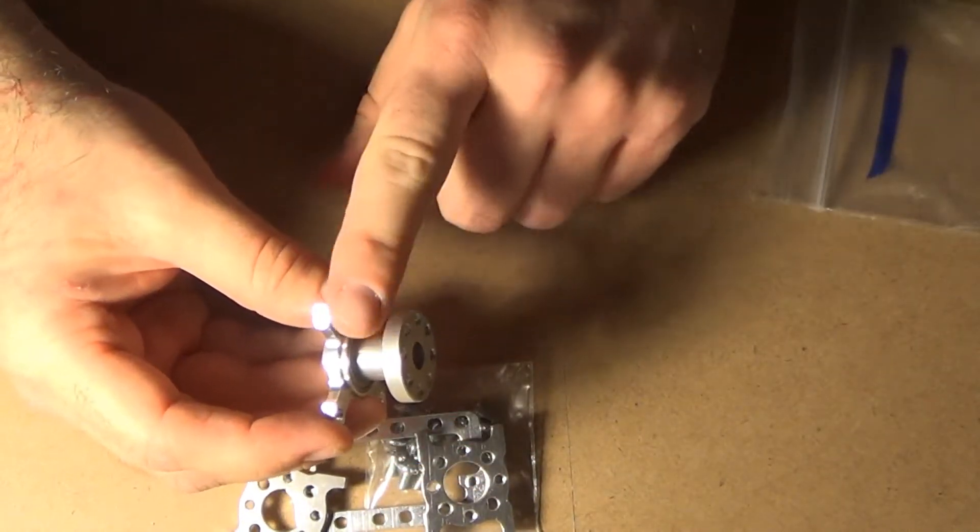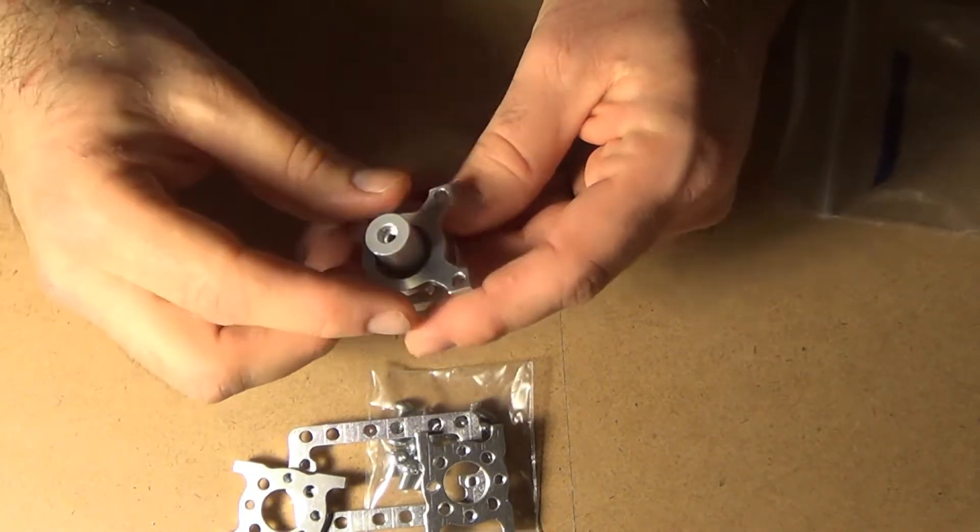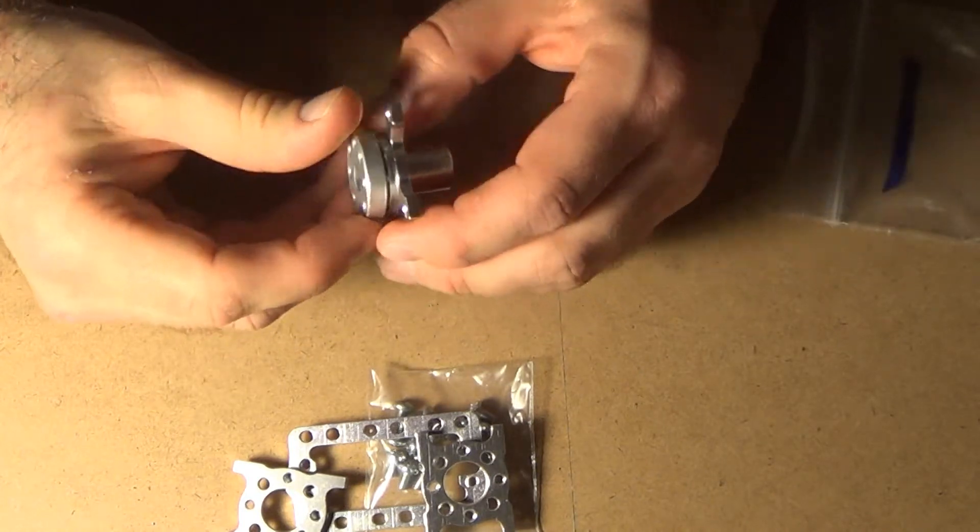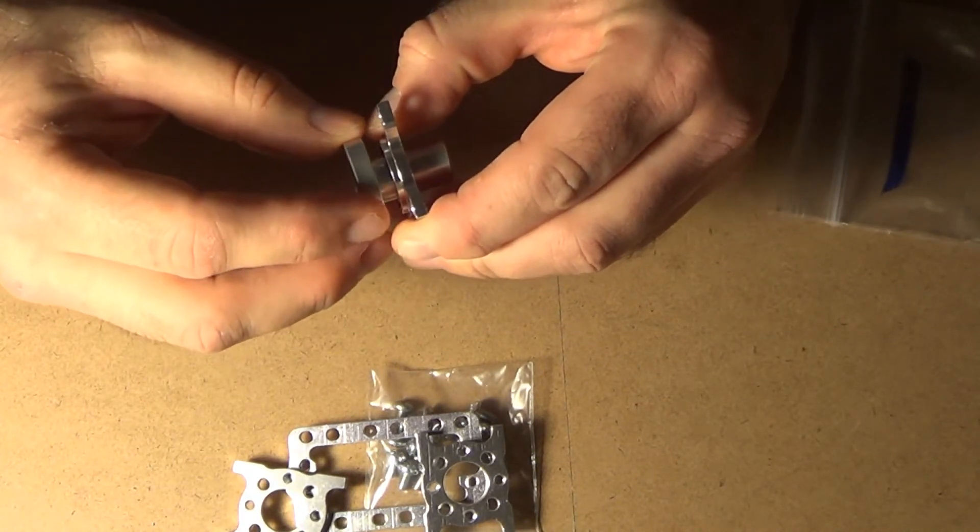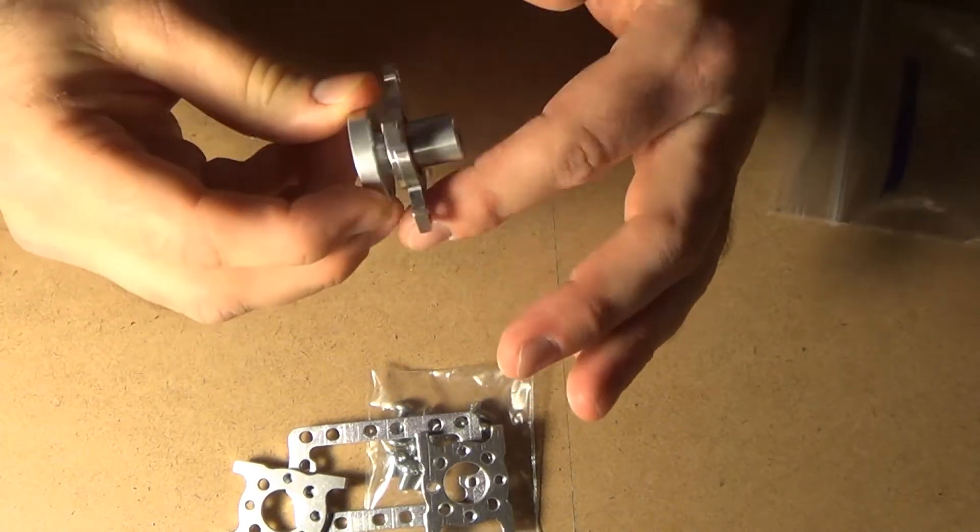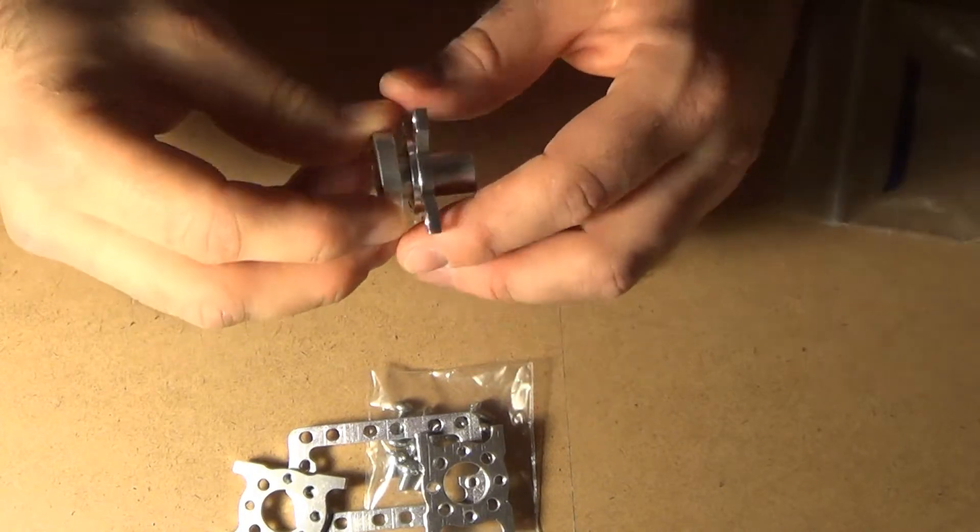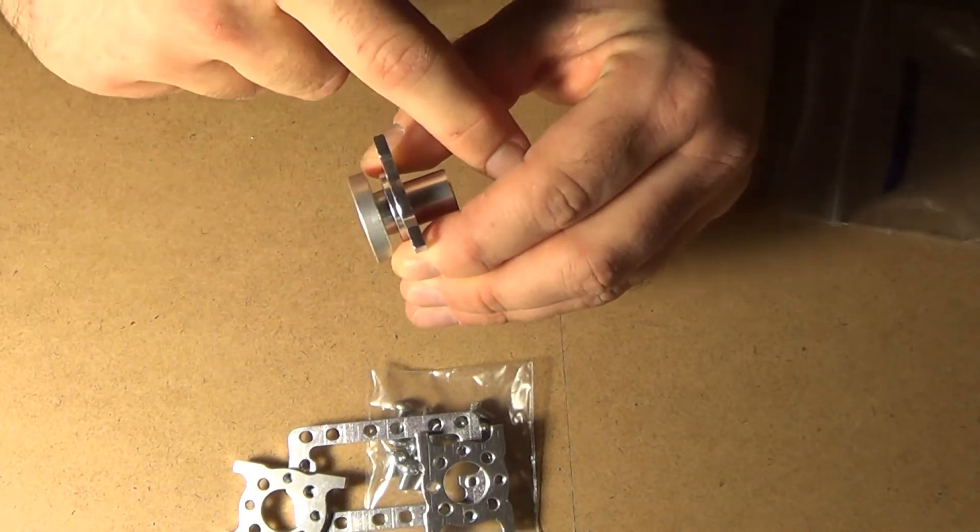And then there's a shaft that connects directly to the servo drive mechanism. And this is I believe called a servo spline shaft hub. And what's nice about this arrangement is if you actually have a load, a weight on this shaft...